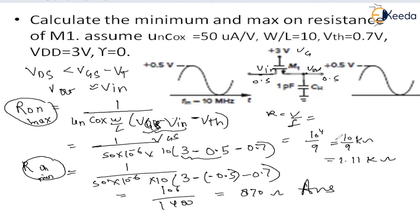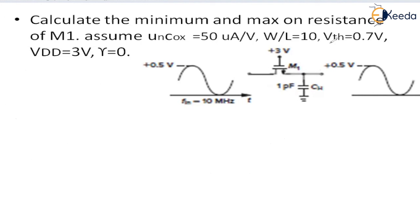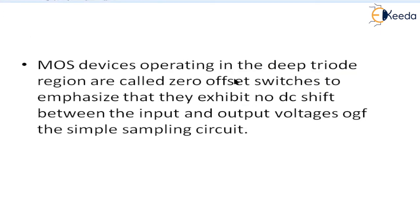To conclude, devices operating in the deep triode region are also called zero-offset switches, to emphasize that they exhibit no DC shift between the input and output voltage of the sampling circuit. As seen in this example, devices which operate in the triode region are called zero-offset switches because there is negligible phase shift between input and output. Thank you.